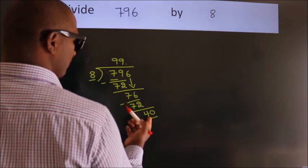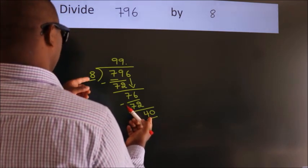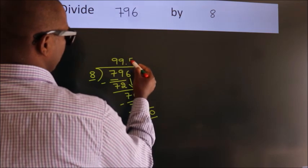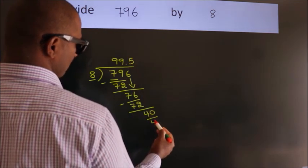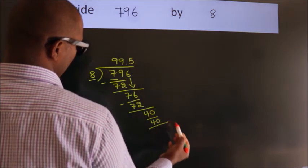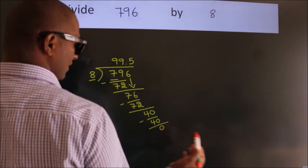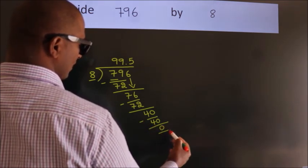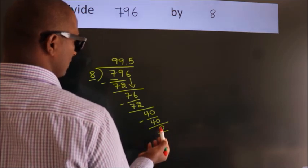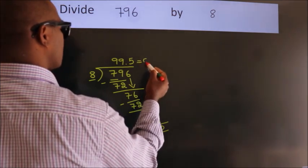When do we get 40 in the 8 table? 8 fives, 40. Now we subtract. We get 0. Here we got remainder 0. So this is our quotient.